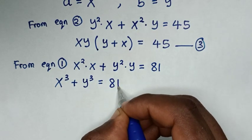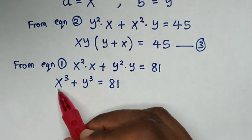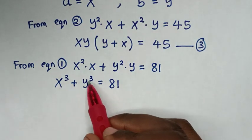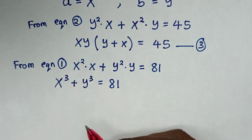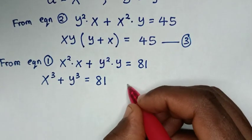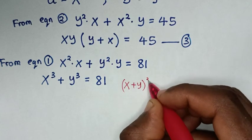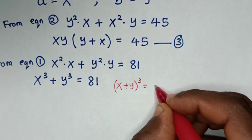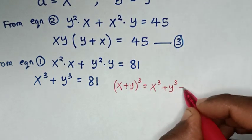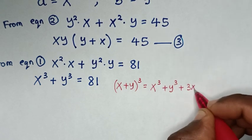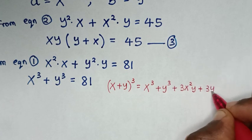Then x squared times x is x to the power 3, plus y squared times y is y to the power 3, is equal to 81. From here, x³ plus y³ — we apply the perfect cube formula, which is (x + y)³ equals x³ plus y³ plus 3x²y plus 3y...